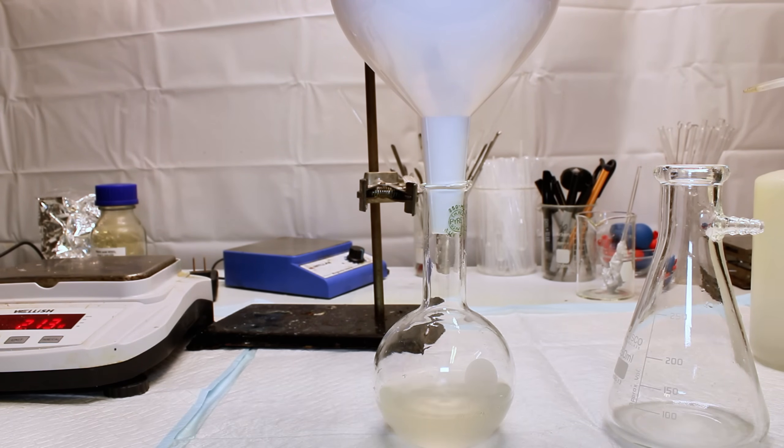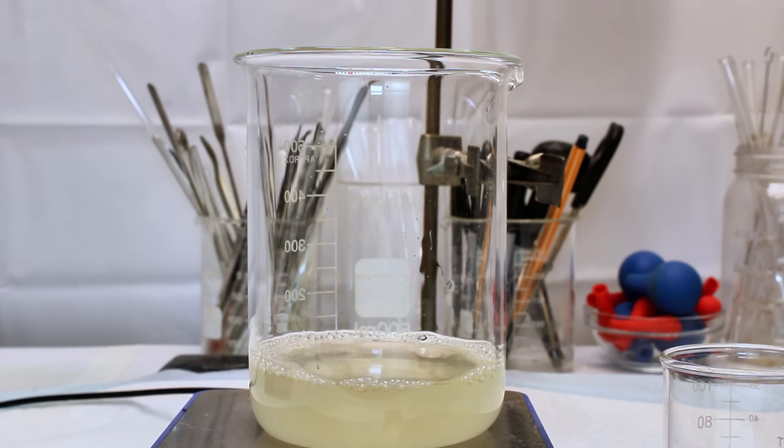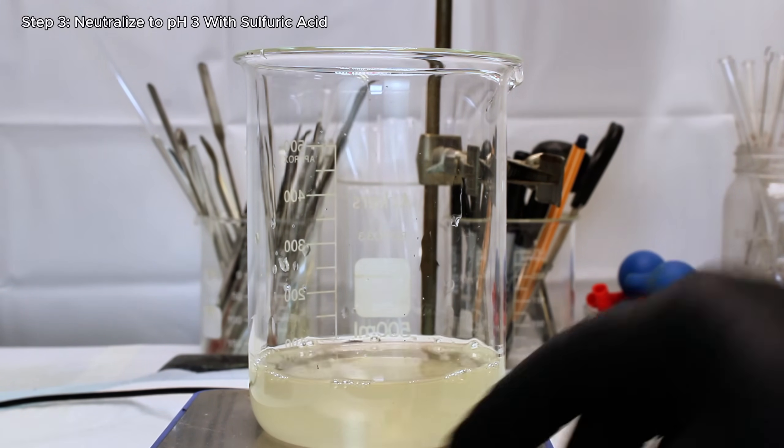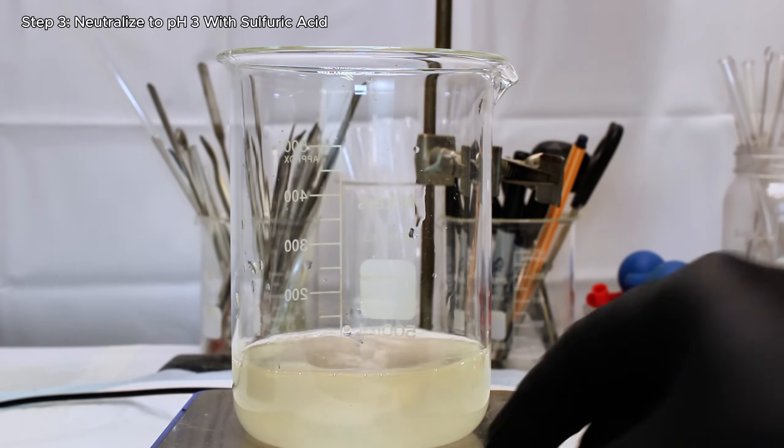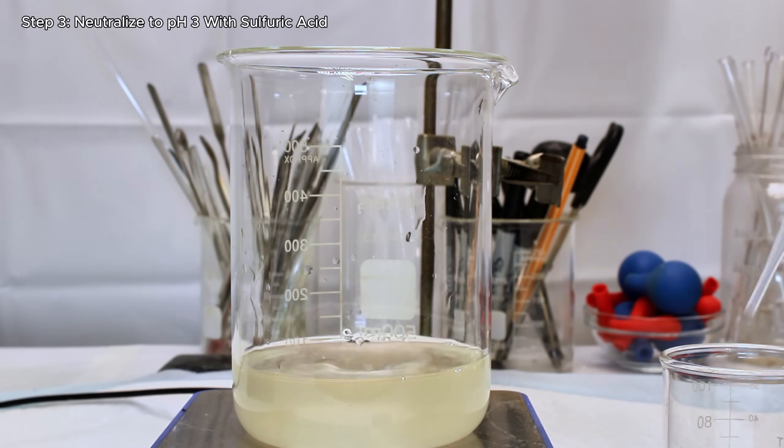And now that I had a clean and clear solution of potassium aluminate, the final reaction step was to neutralize this with sulfuric acid. This reaction is also extremely exothermic, so it's important to either make small additions like I did, or dilute your acid beforehand.